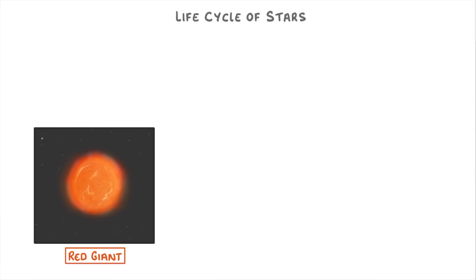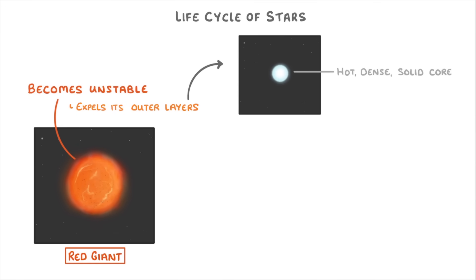After a relatively short time, the red giant becomes unstable and expels its outer layers of dust and gas. This leaves behind a hot, dense, solid core, which doesn't do any nuclear fusion.